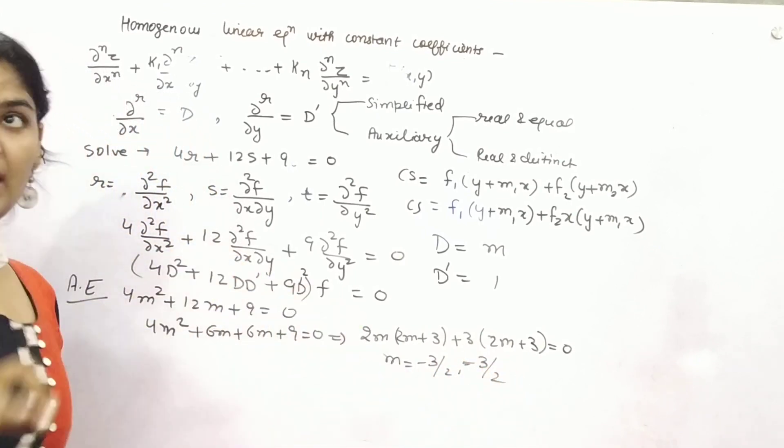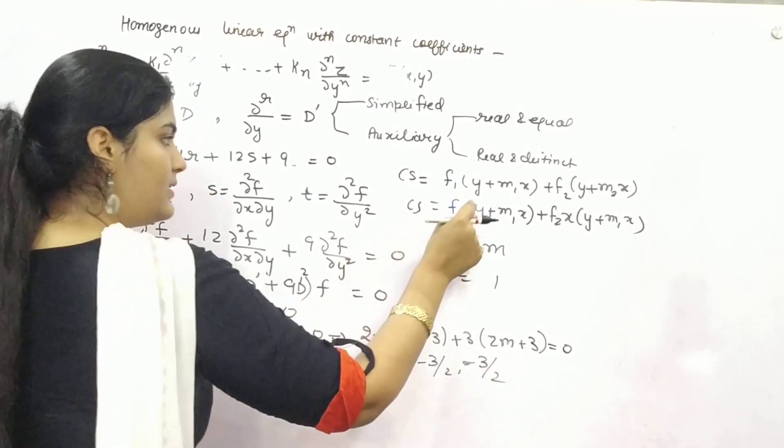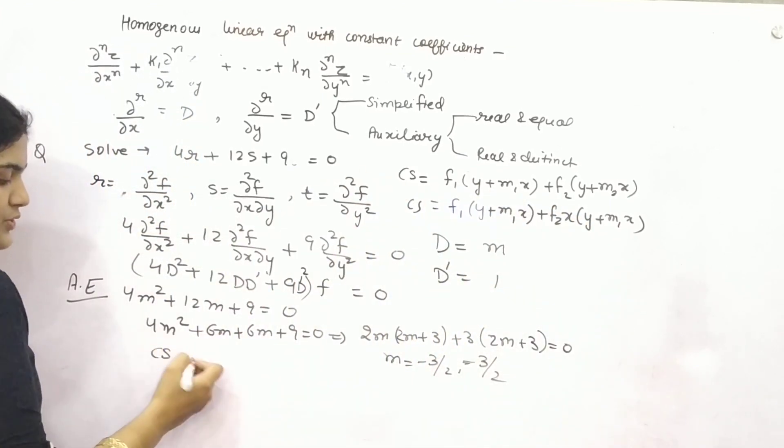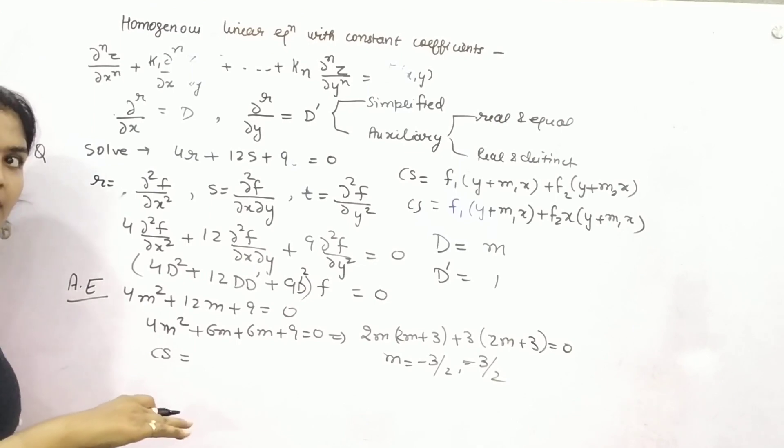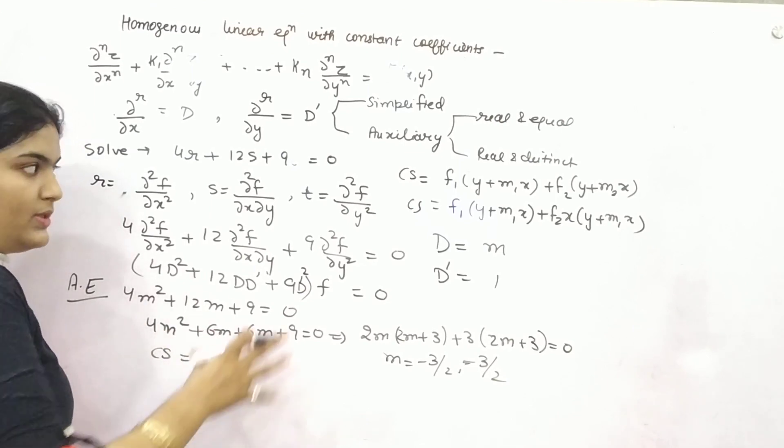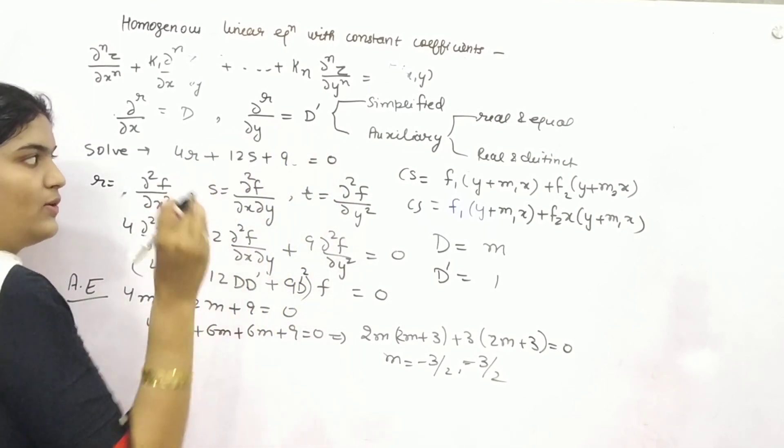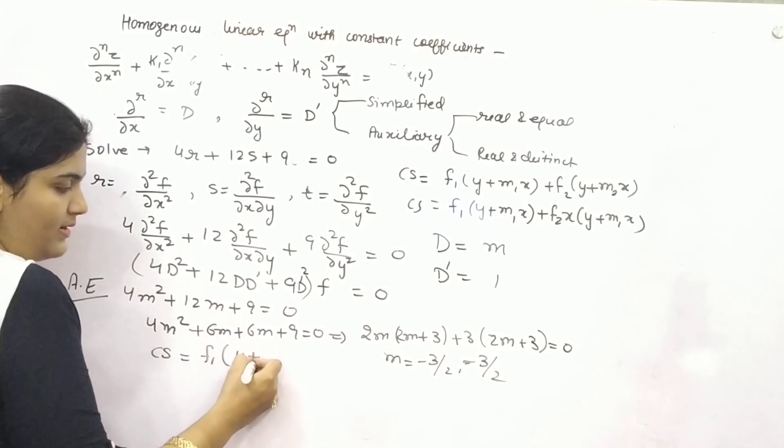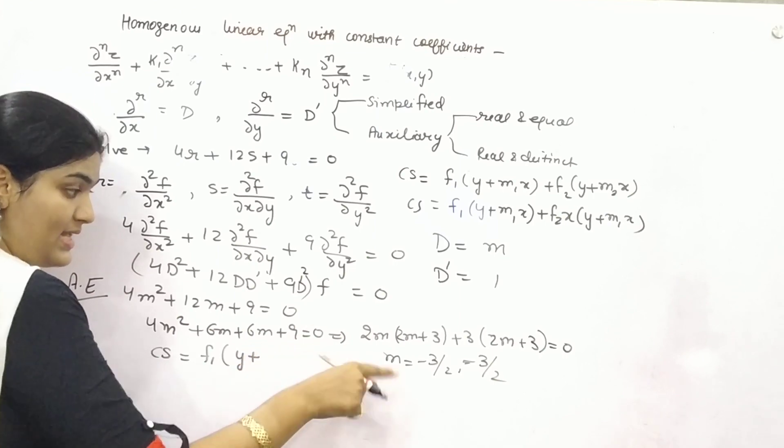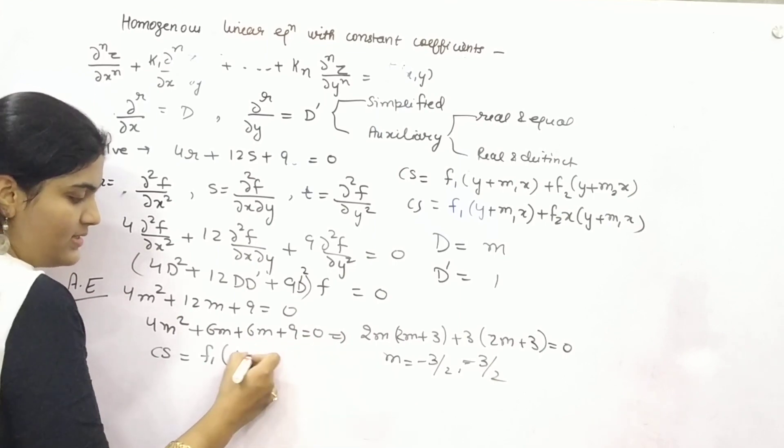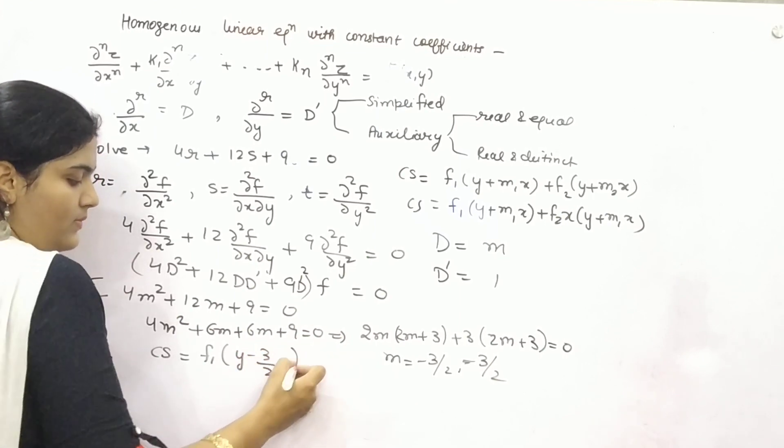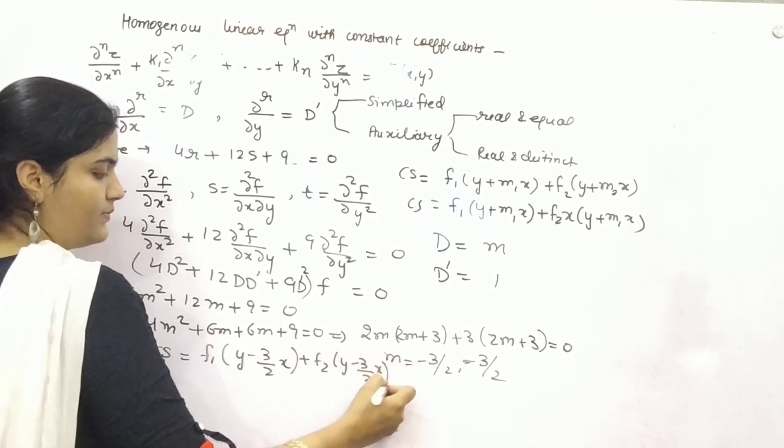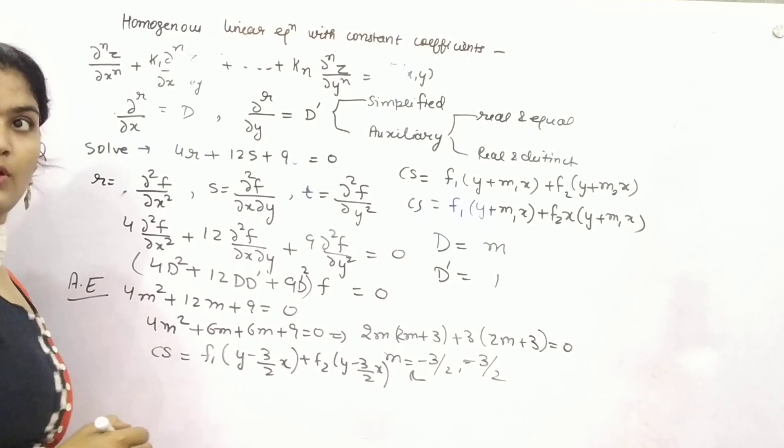Because roots are equal, so the formula is m1, m1. Your complete solution, your complementary factor and complete solution will be the same because you have equation equals to 0. f1(y + m1x), because m is minus, so minus 3 by 2 x, plus f2(y minus 3 by 2 x). This is your answer.